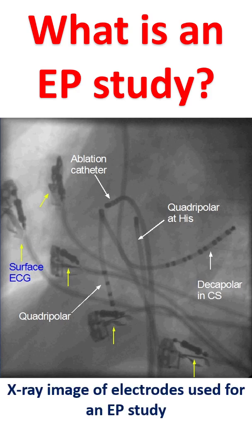EP study is short form for Electrophysiology study. It is a test done to assess the electrical system of the heart. The heart has an electrical system in which regular pulses are produced from the right upper chamber by a small structure known as the sinus node.